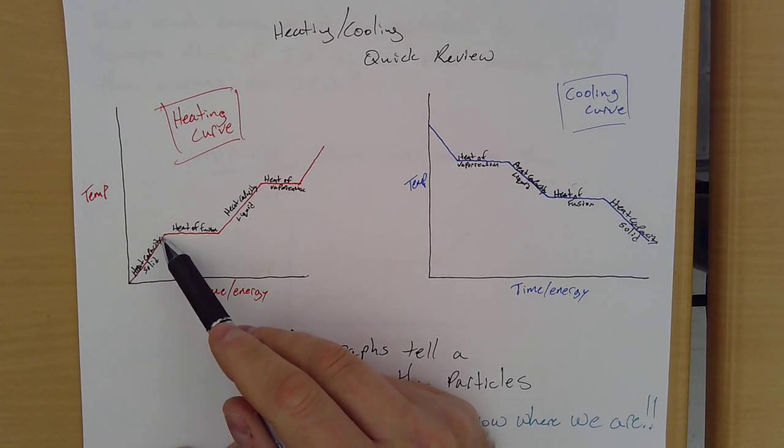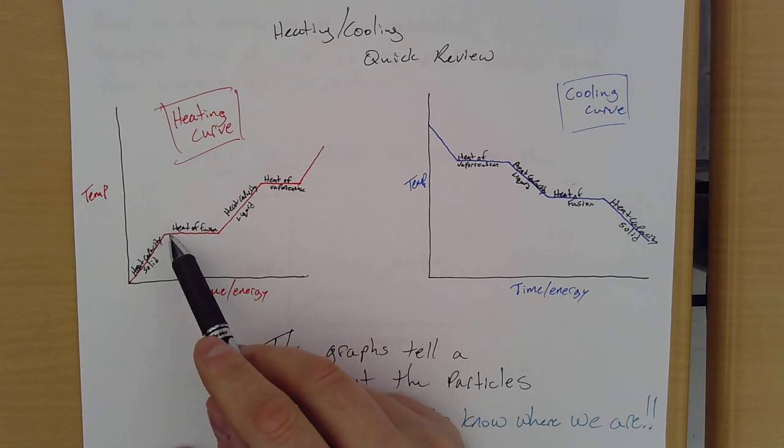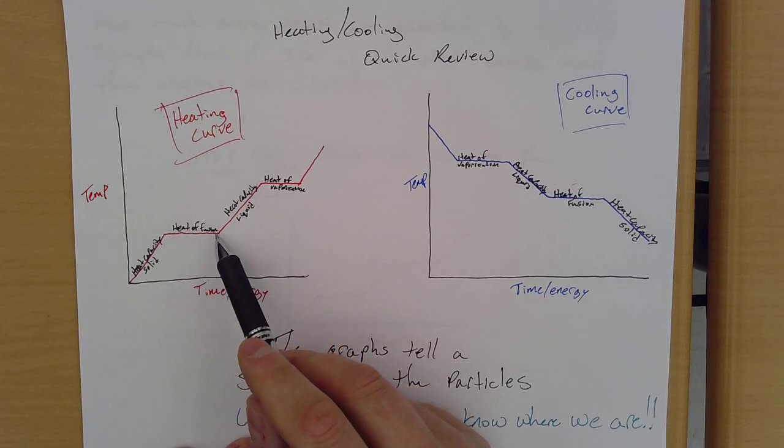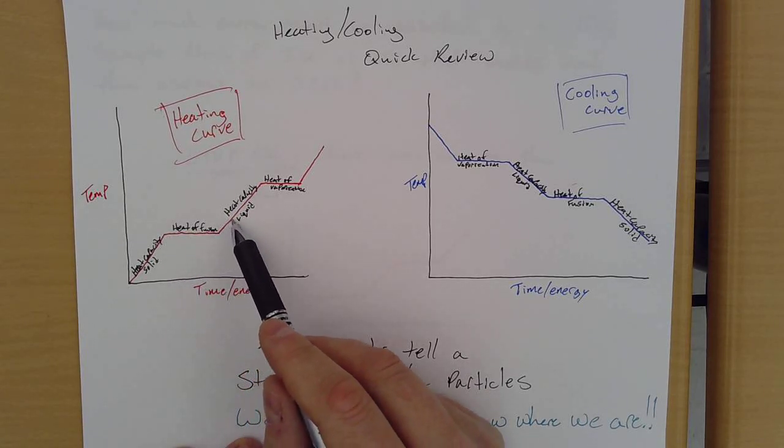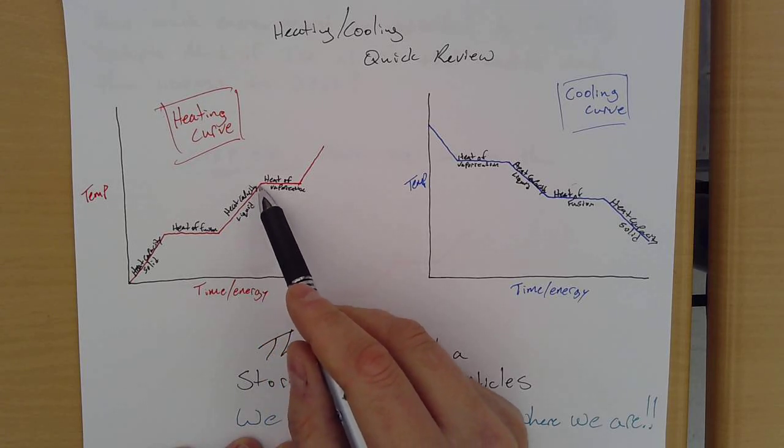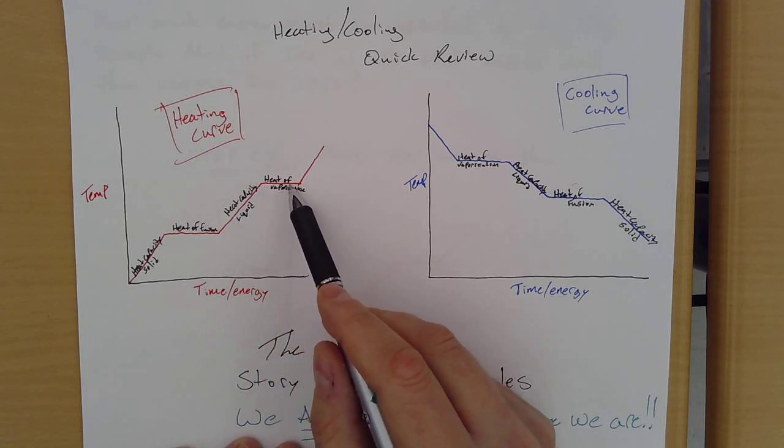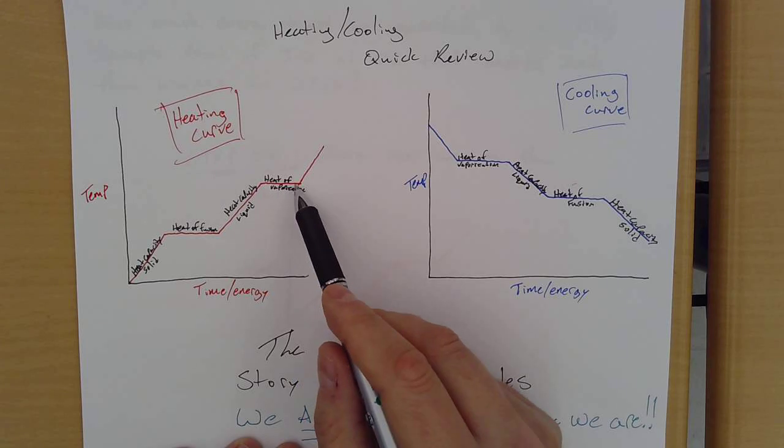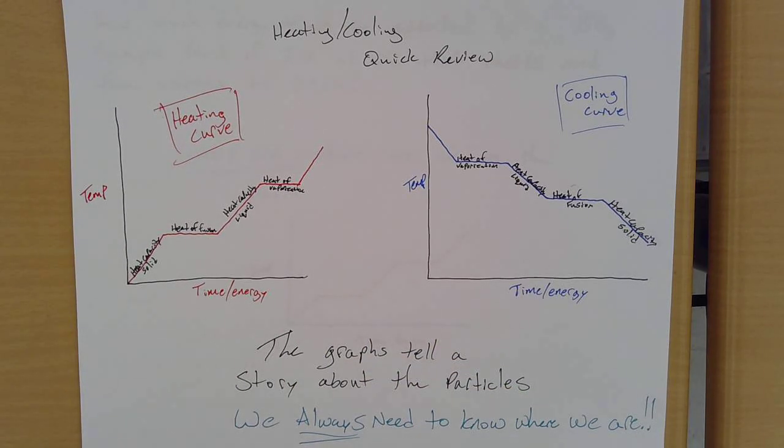So if I'm on this bottom line, I'm using the heat capacity of a solid, then I start to melt, I got to use that heat of fusion, then I'm going to raise the temperature again, that's heat capacity of a liquid, then I'm going to space out again, that's vaporization or evaporating, right, that's where we're going to start to have to use our heat of vaporization.